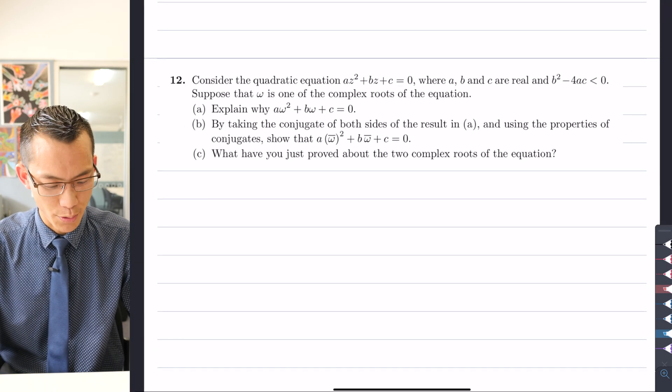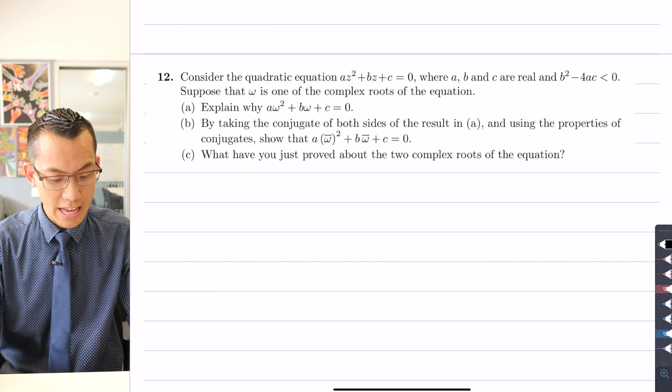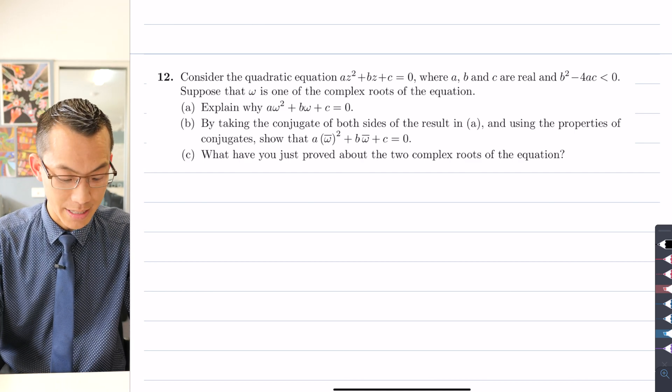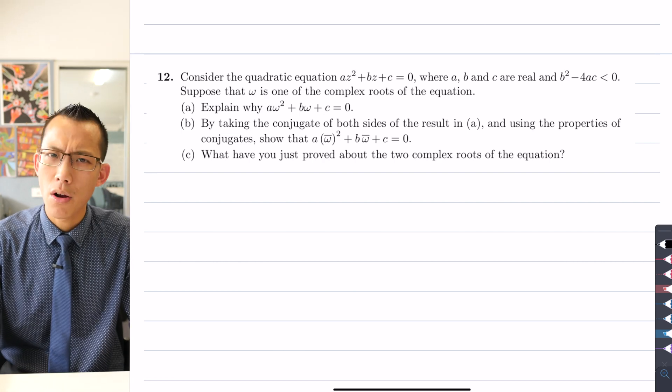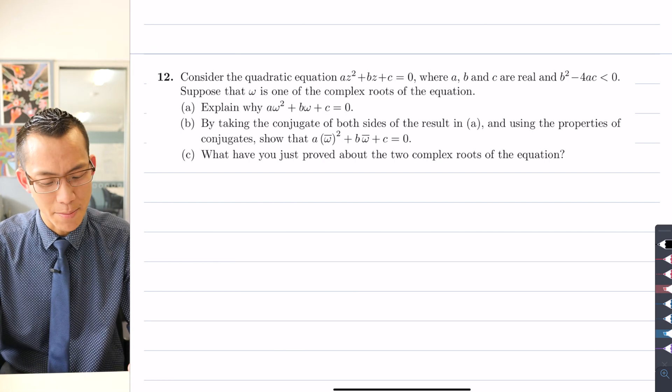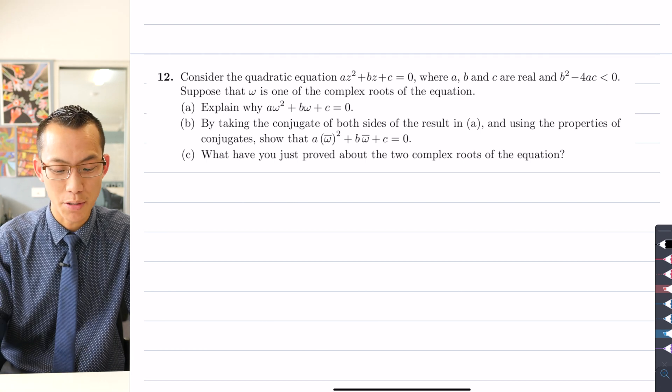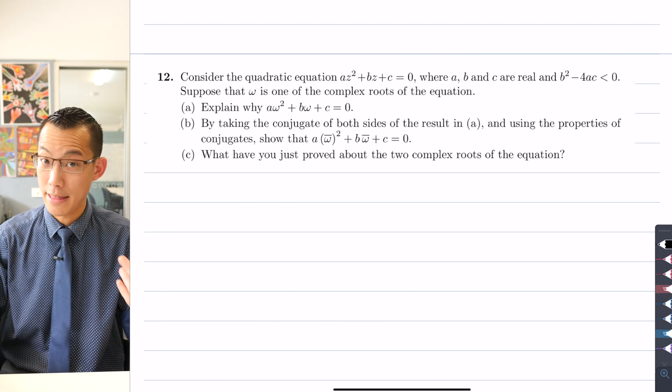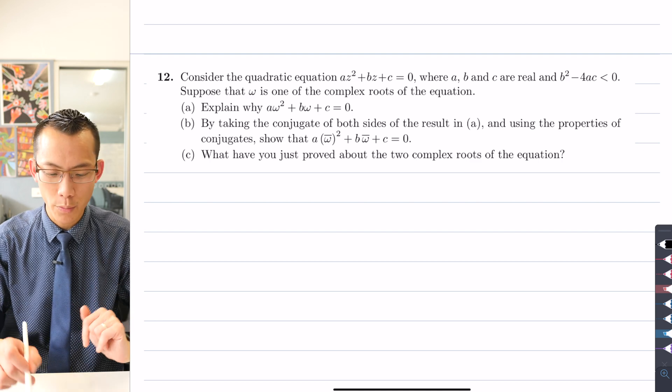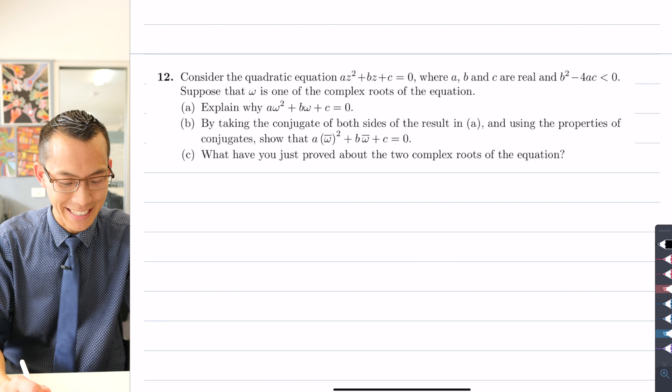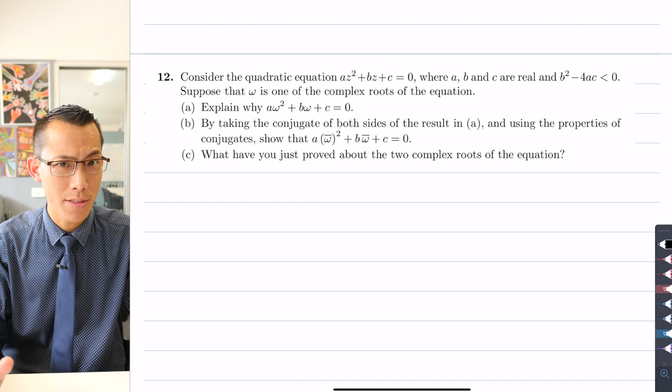So then what are they asking us to prove? It says for part (a), explain why aω² + bω + c = 0. All right, so this is not meant to be an arduous question, but you need to think logically about what is the relationship between the roots of an equation and the equation itself. So before we tuck into this particular one, which really isn't going to be very dramatic, let's just think about an example where we know things a little bit better.